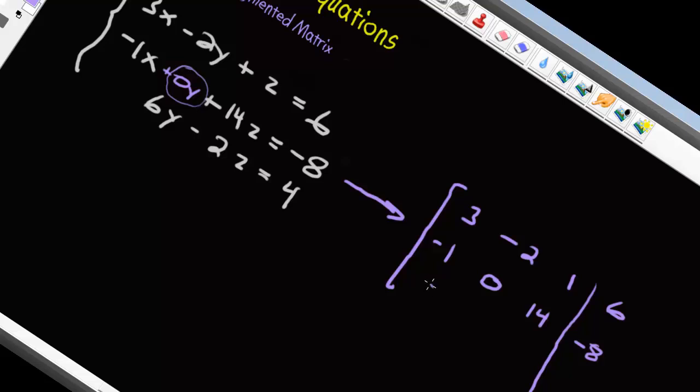Now there's no x, so we're just going to put a 0 for x, 6y, and negative 2z, so negative 2, and then that 4. Close the bracket, and there's our augmented matrix.